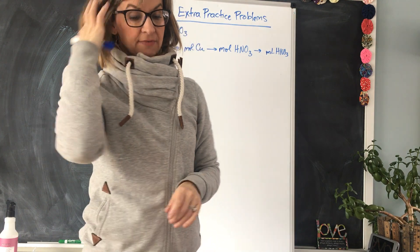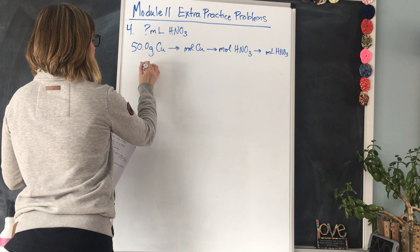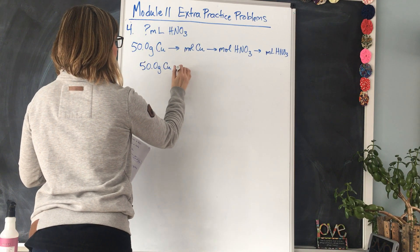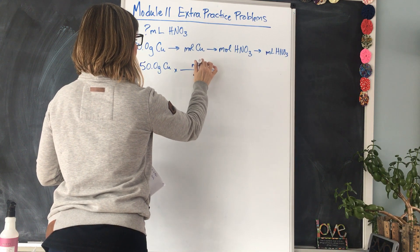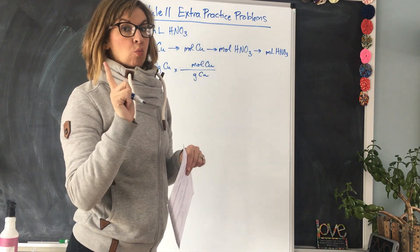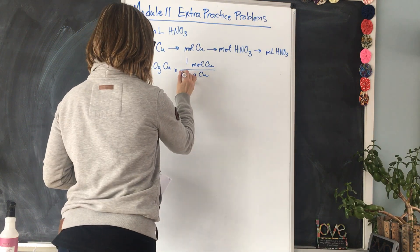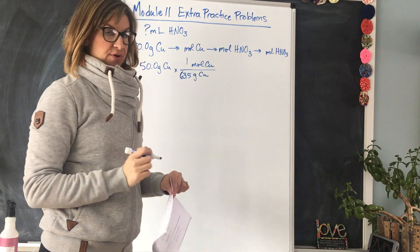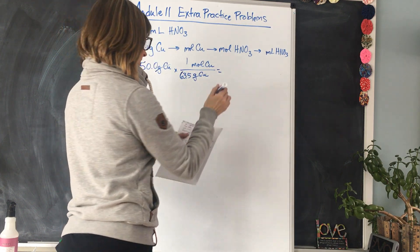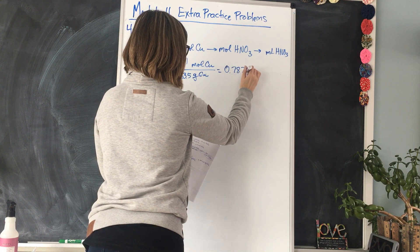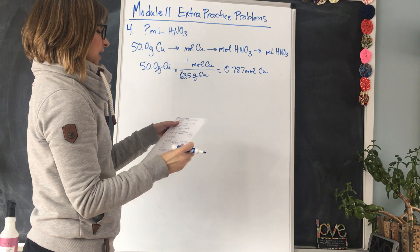50.0 grams of copper — using the factor label method, put grams of copper on the bottom and moles of copper on the top. In one mole of copper, the periodic table tells us there are 63.5 grams of copper. Grams of copper cancel out, and we find we have 0.787 moles of copper.